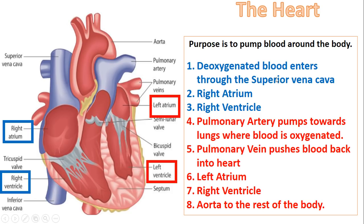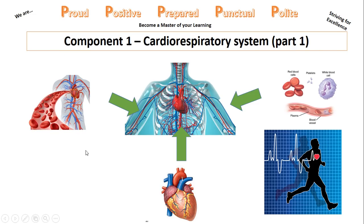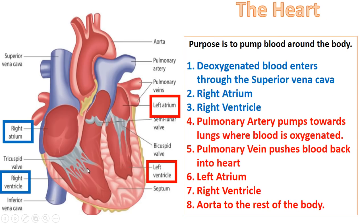This is the order blood takes to become oxygenated. Deoxygenated blood enters through the superior vena cava and goes into the right atrium. Once it's been in the right atrium, it's pumped through a valve into the right ventricle. Once through that ventricle, it's pushed up through the pulmonary artery. The deoxygenated blood then goes towards your lungs, where it is oxygenated and filled with oxygen. So these first steps are where the blood is deoxygenated.